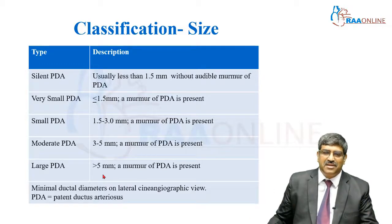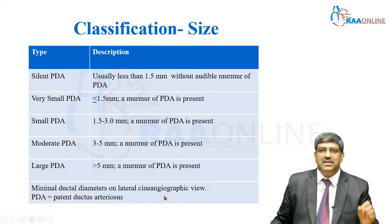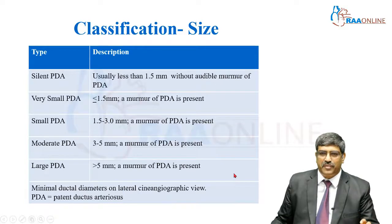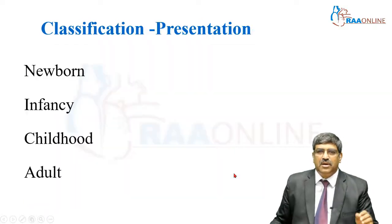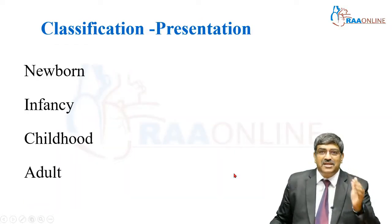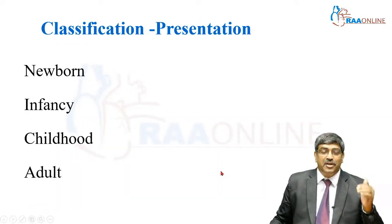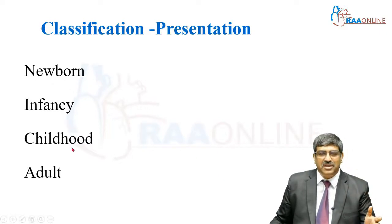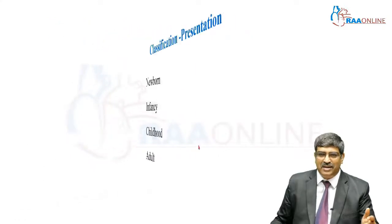This size is decided on the lateral cineangiographic view. Coming to the age of presentation, it can present immediately in the newborn period — particularly in a premature baby — or in infancy, childhood, or adulthood.